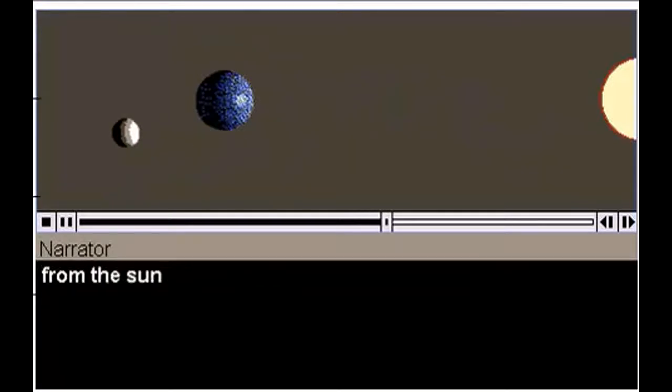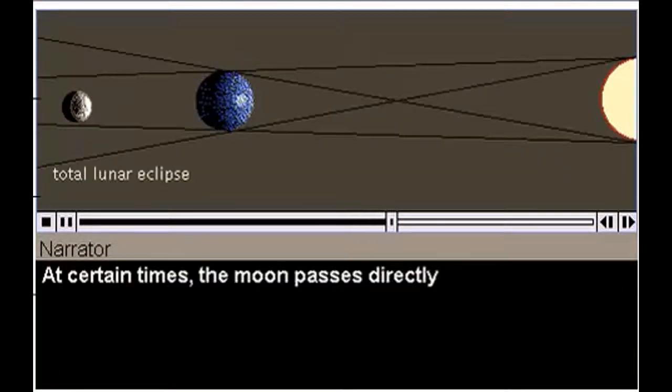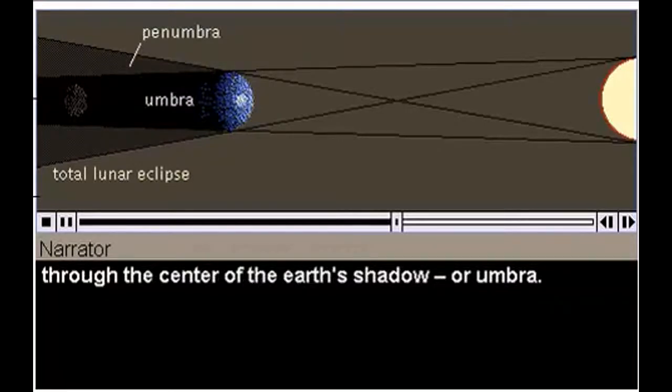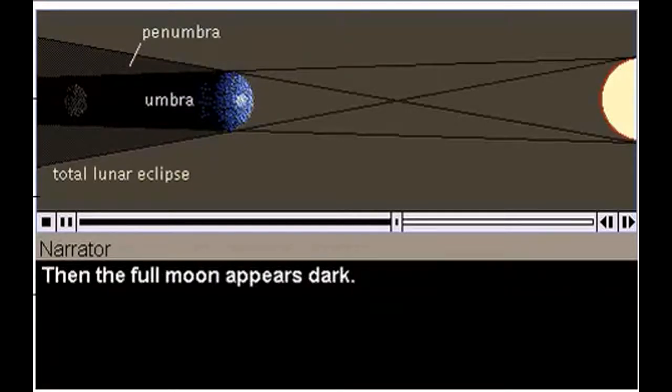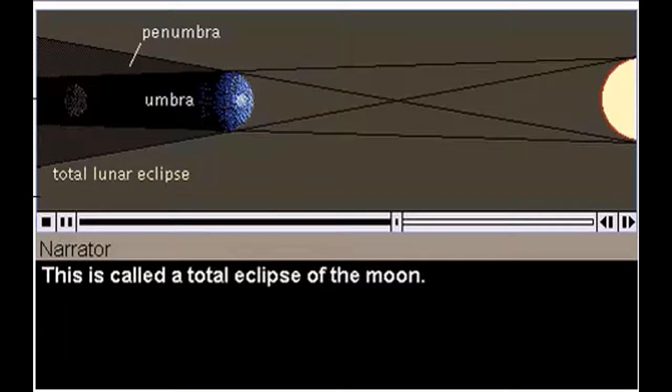When the Moon is on the opposite side of the Earth from the Sun, we see a full Moon. At certain times, the Moon passes directly through the center of the Earth's shadow, or umbra. Then the full Moon appears dark. This is called a total eclipse of the Moon.